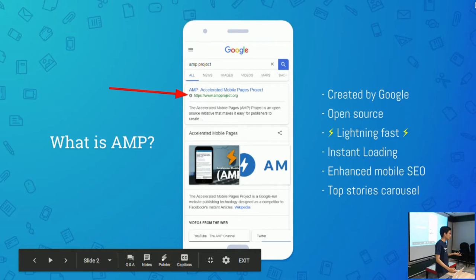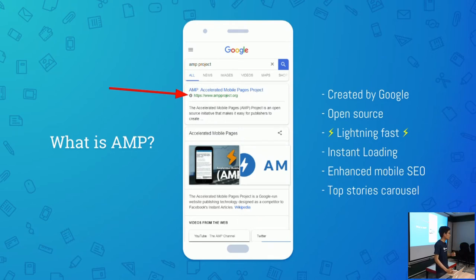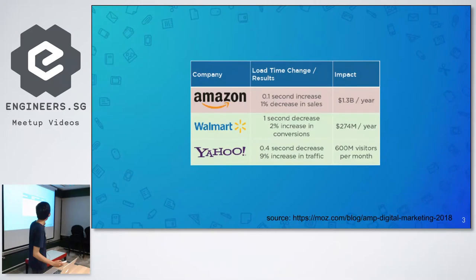Another reason someone would be interested in AMP pages is that it's lightning fast — it's instantaneous. The moment you see the result and click on it, it loads instantly. There was a survey showing that more than 50% of users will leave your website if it takes longer than 3 seconds to load. For companies such as Amazon, Walmart, and Google, load time does matter. The faster you can make your site, the better business results you can get.